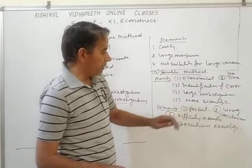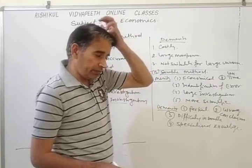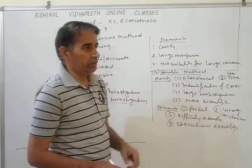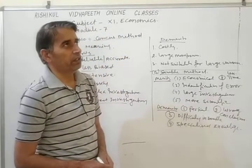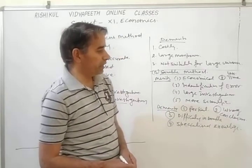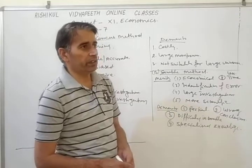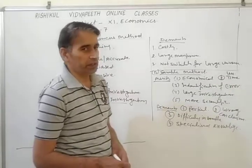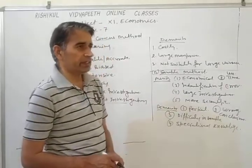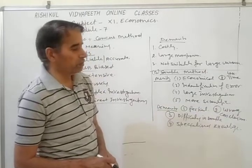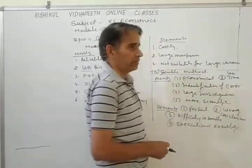Next demerit is difficulty in making an accurate sample size. For example, if there are 100 items in a universe and we want to select some items, which items should be selected and how do we decide whether 100, 150, or 200 items are sufficient? So deciding an accurate sample size is a problem.